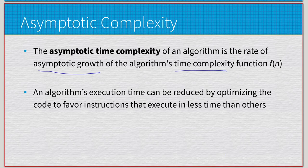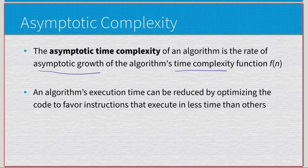That's analyzing the time complexity, but with asymptotic growth we have a few more variances and particular details to look at. An algorithm's execution time can be reduced by optimizing the code to favor instructions that execute in less time — taking fewer clock cycles on the CPU and overall fewer individual operations.